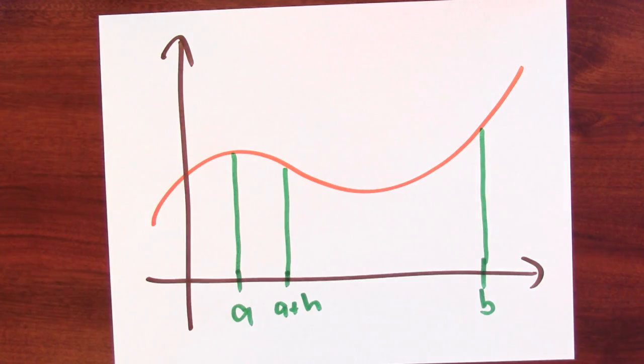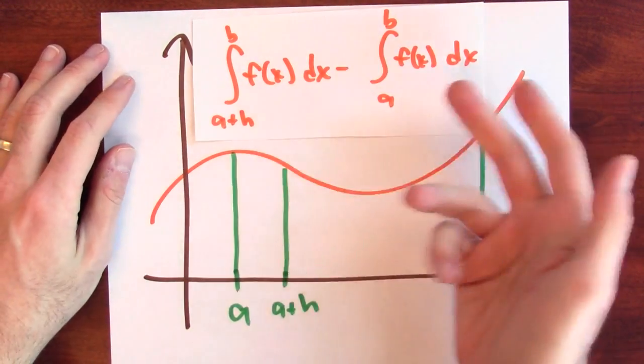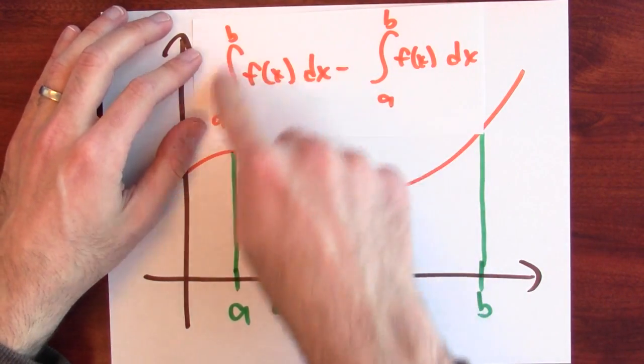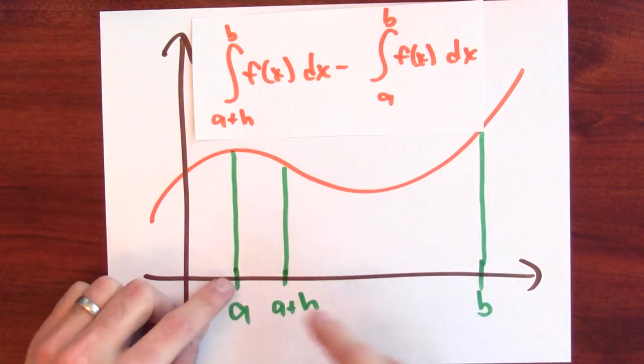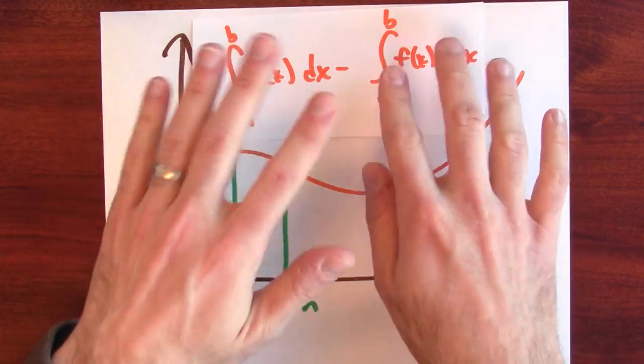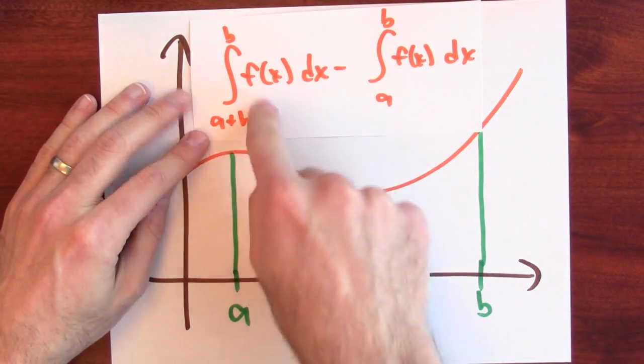And I want to know, how does the integral change? Well, the quantity that calculates the absolute change in the integral is this. What's this thing here? This is the integral from a plus h to b. And this thing here is the integral from a to b. So this difference is telling me how the integral changes when I replace a by a plus h.